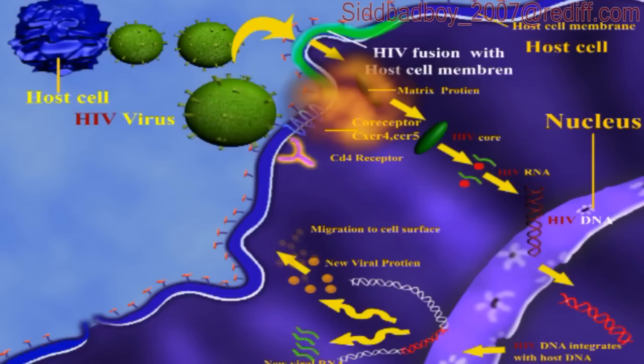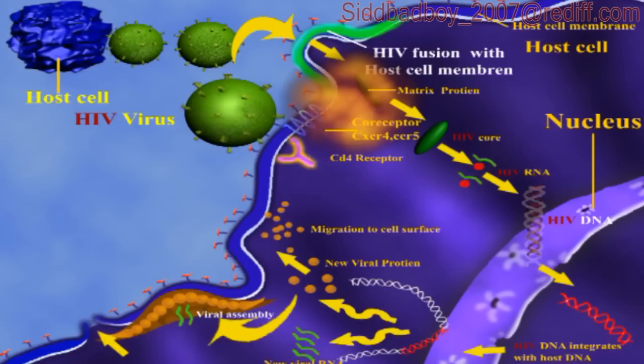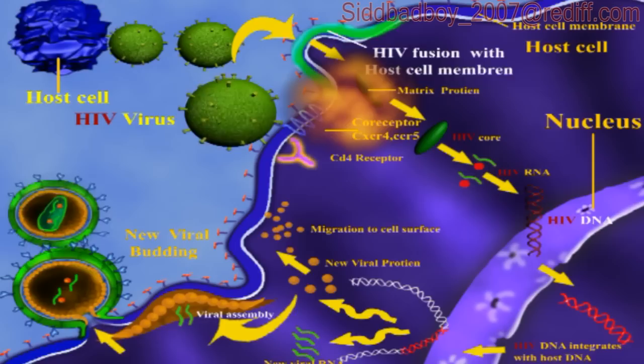The viral RNA gives rise to a group of viral assembly. This evokes a process allowing new viral budding. After the completion of the virus life cycle, finally a new mature HIV is born.